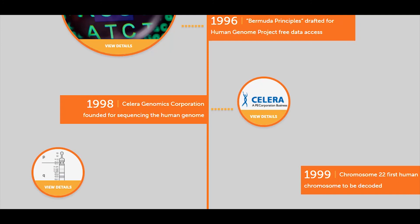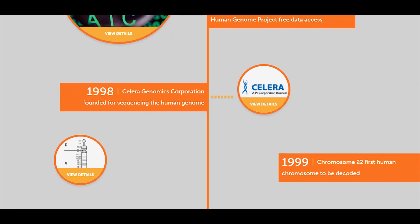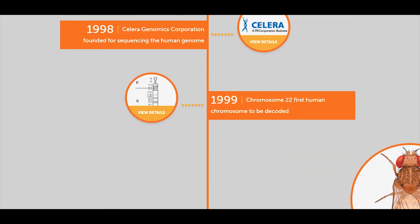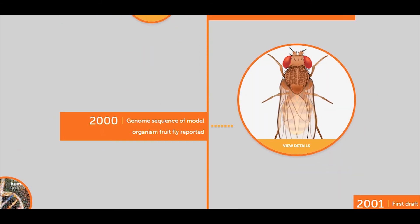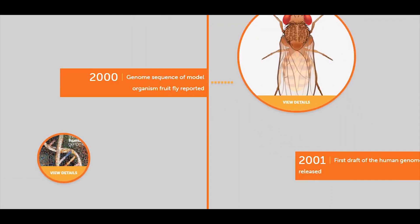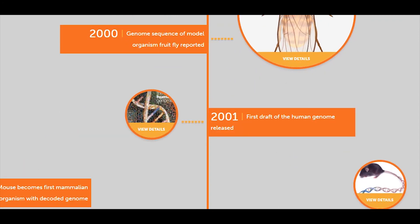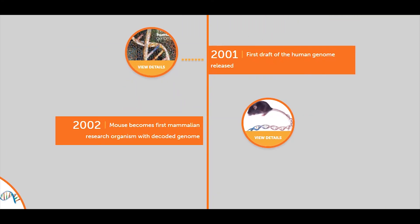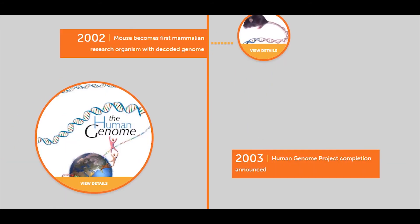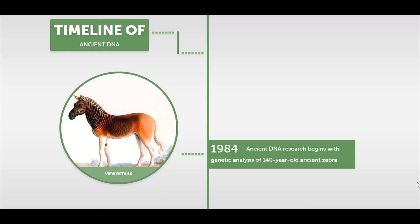In 1999, chromosome number 22 became the first human chromosome to be decoded. In 2000, the genome sequence of the model organism fruit fly was reported. In 2001, the first draft of the human genome was released. In 2002, the mouse became the first mammalian research organism with a decoded genome. In 2003, the Human Genome Project completion was announced.